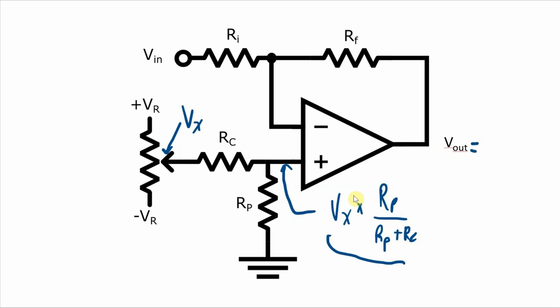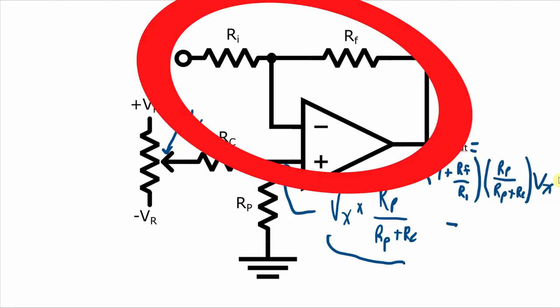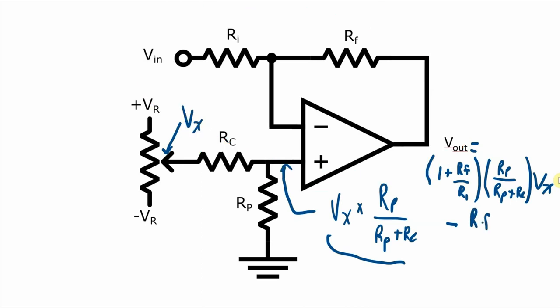So here overall, our Vout is going to be the non-inverting gain times the voltage at this point minus this half of the circuit. So that'll be the inverting gain times VIN. So there's our inverting amplifier part, and that part there is our input offset voltage compensating part.